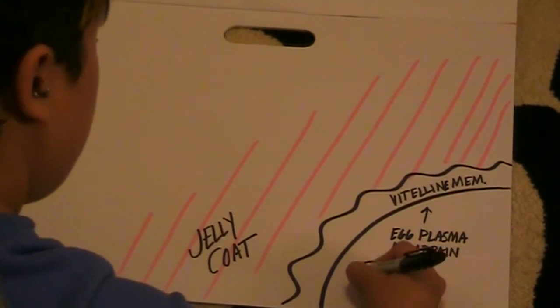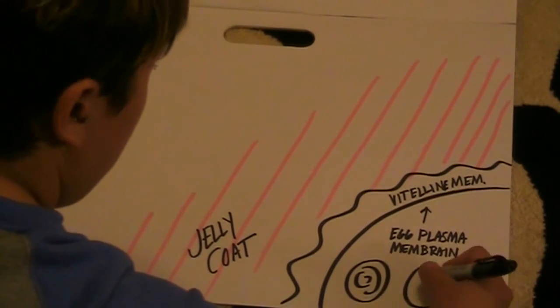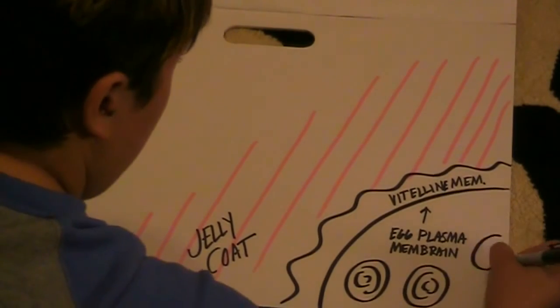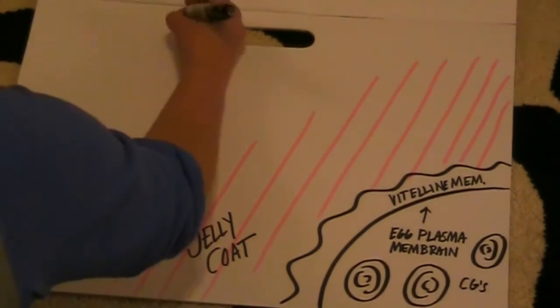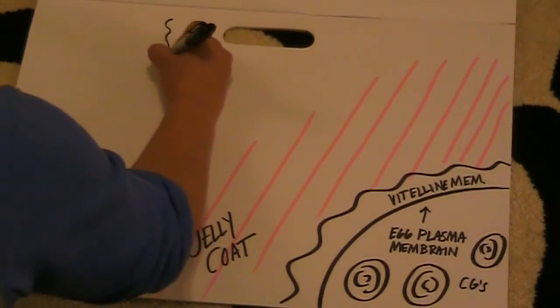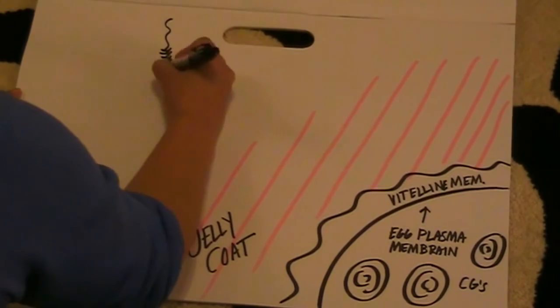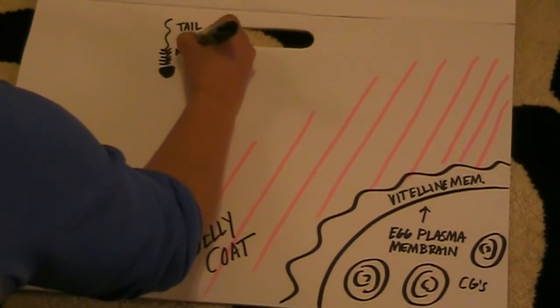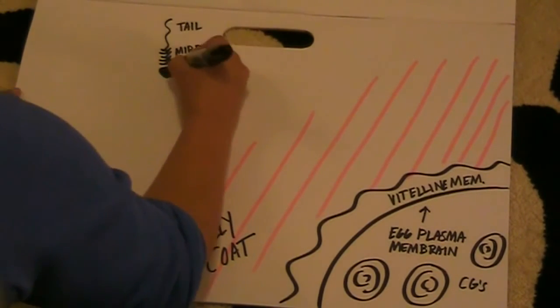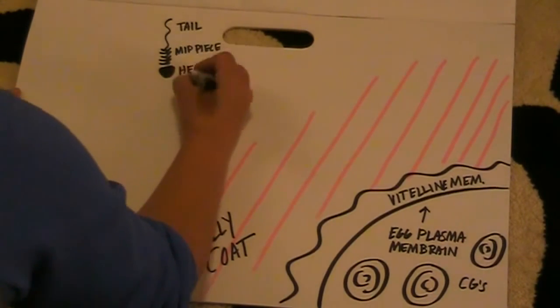Then you have a little space, then you have another membrane called the vitelline membrane. Then outside of that, you have the jelly coat. And within your egg, you have what's called cortical granules, and those are going to be very important here in a little bit.